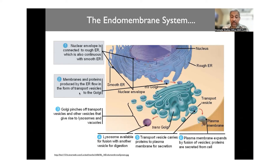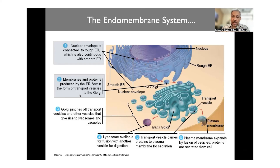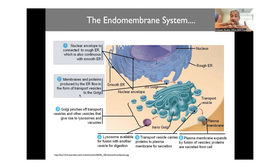Transport vesicles carry proteins to the plasma membrane, come and fuse with it, and deliver their contents. The plasma membrane acts as the perimeter of the cell, but it also acts as a place where many of these components can be delivered and will then talk to the external environment.